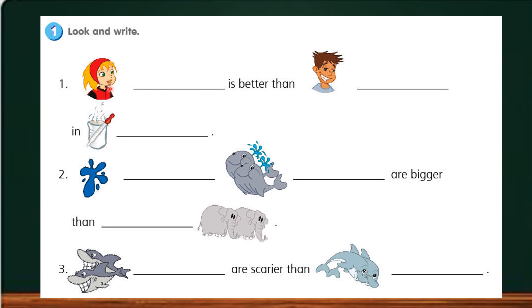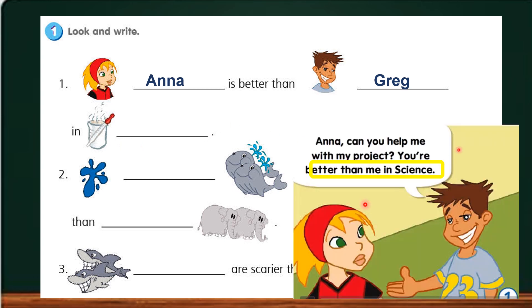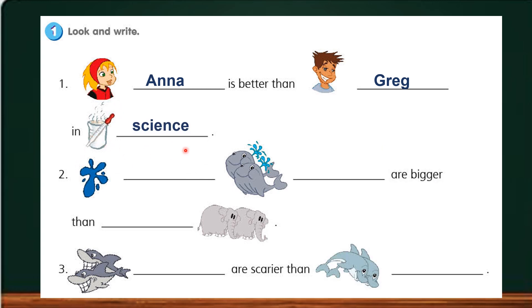Number one, who is this girl? The girl with yellow hair is Anna. Anna is better than the boy. Who is this boy? The boy is Greg. In what subject? Just refer to picture 1. You are better than me in science, Greg said. So this picture should be the science experiment. And the answer is science.